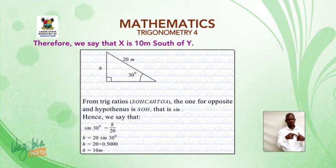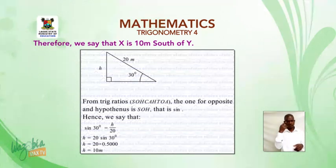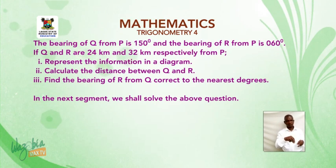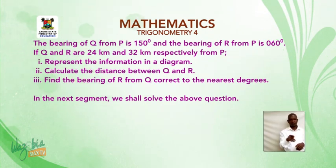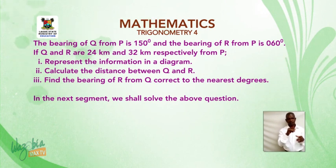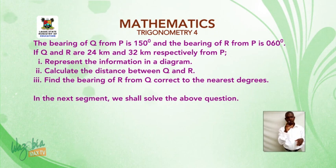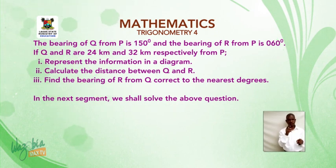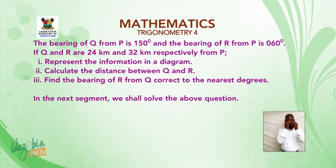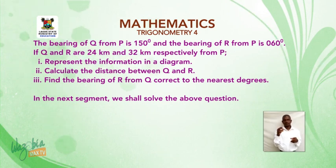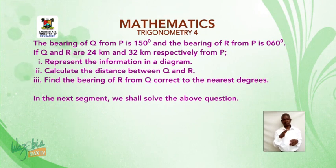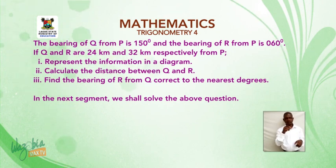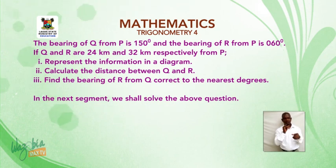Before the next segment, let's look at the third question. The bearing of Q from P is 150 degrees, and the bearing of R from P is 060 degrees. If Q and R are 24 kilometers and 32 kilometers respectively from P, you are required to: one, represent the information in a diagram; two, calculate the distance between Q and R; and three, find the bearing of R from Q, correct to the nearest degree. In the next segment, we shall solve the question. Thank you very much.